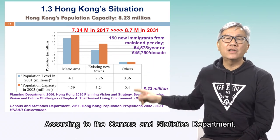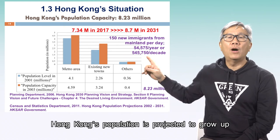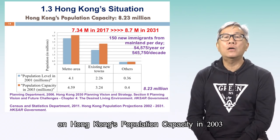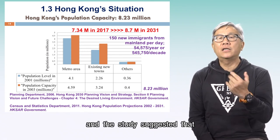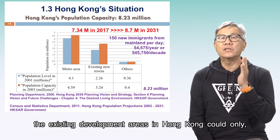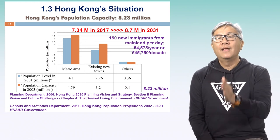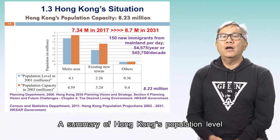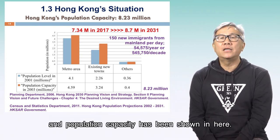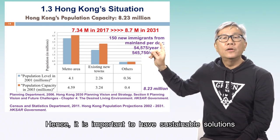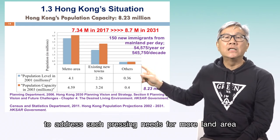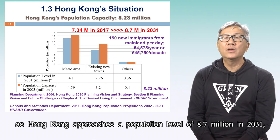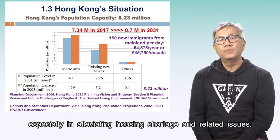Coming to Hong Kong, according to the Census and Statistics Department, Hong Kong's population is projected to grow to around 8.7 million by 2031. However, the Planning Department's 2023 study on Hong Kong's population capacity suggested that existing development areas could only physically accommodate a total population of 8.23 million. Hence, sustainable solutions are important to address the pressing need for more land area, especially in alleviating housing shortage and related issues.